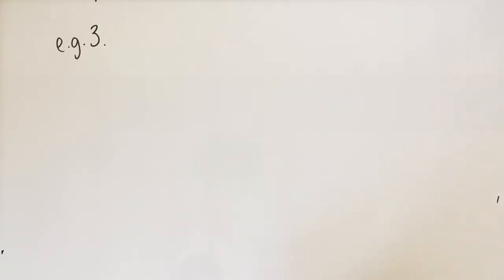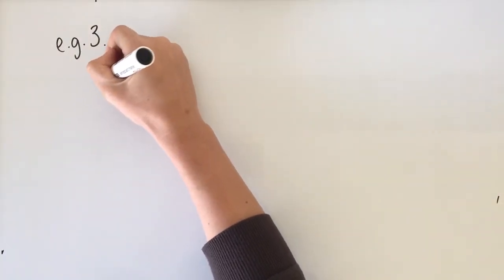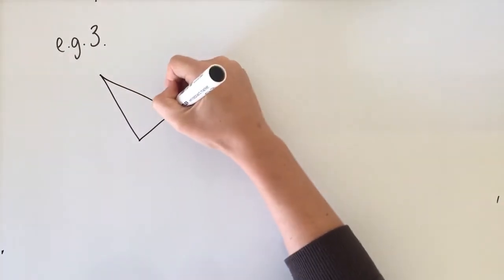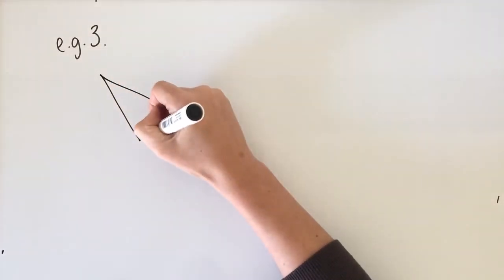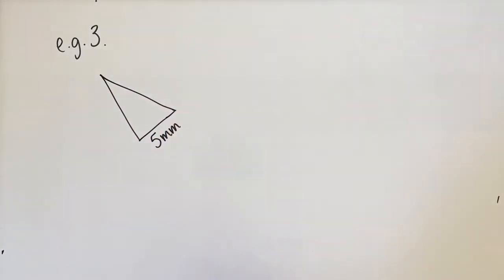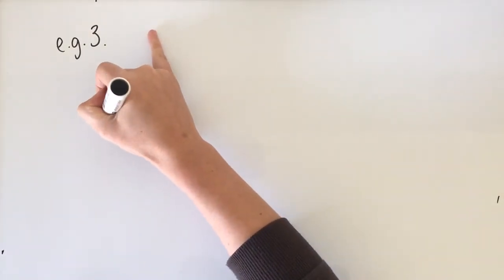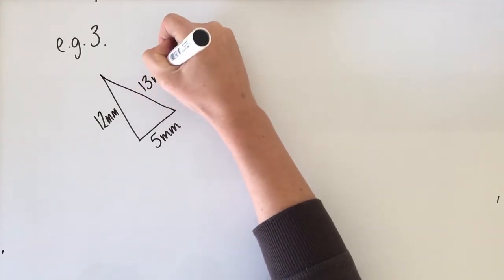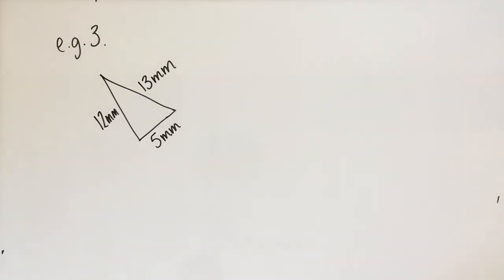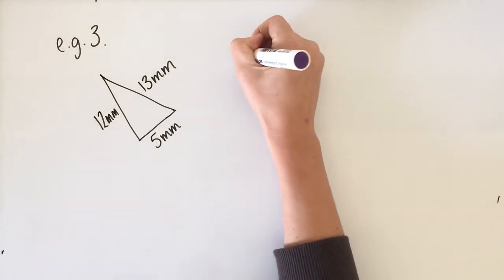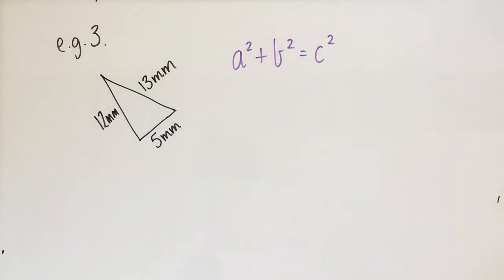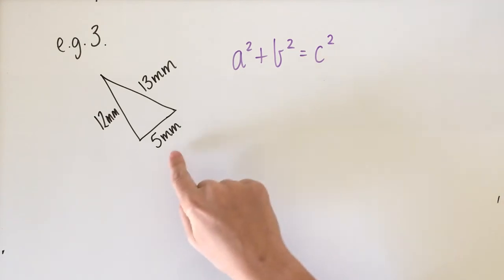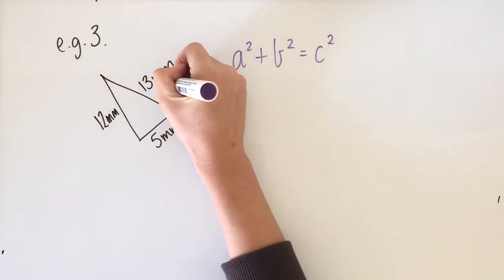This is the last example in this video. We have a triangle with sides 5 millimetres, 12 millimetres, and 13 millimetres. By now we know the first thing is to write down our formula: a squared plus b squared equals c squared. Next, label the sides. C is the hypotenuse — the longest side — so 13 is c. A and b are the short sides; it doesn't matter which is which.